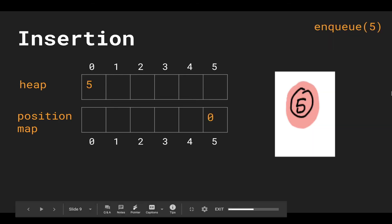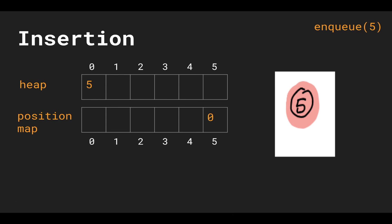Let's see how this works. Let's enqueue 5. We're going to push it onto our heap array, and then we're going to add an extra step: we're going to hold some sort of data structure, which is our position map — the mapping from values to indices. Because 5 is at the 0th index of our heap array, we're going to insert 0 at the 5th index of the position map.